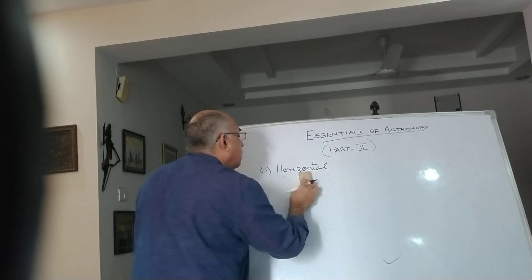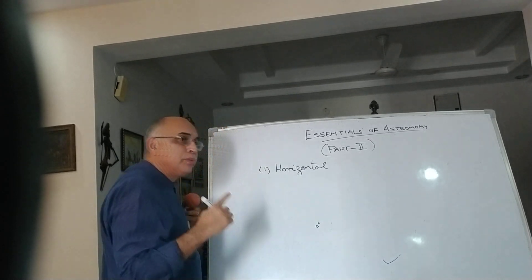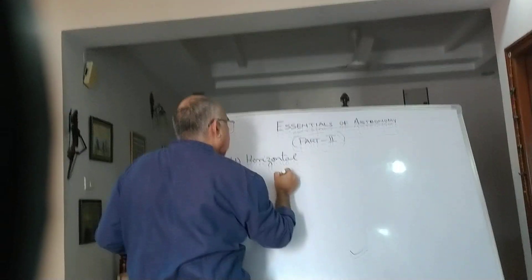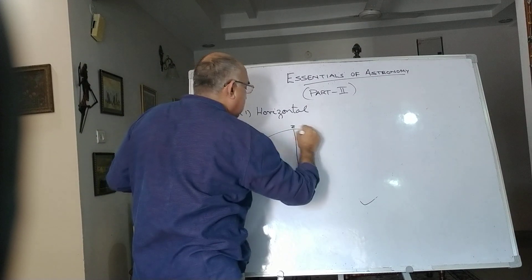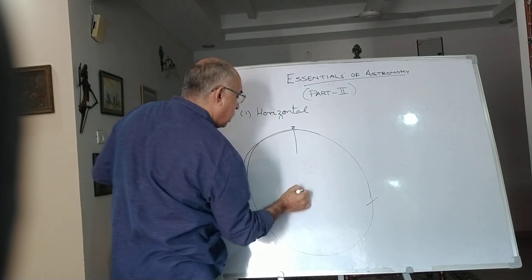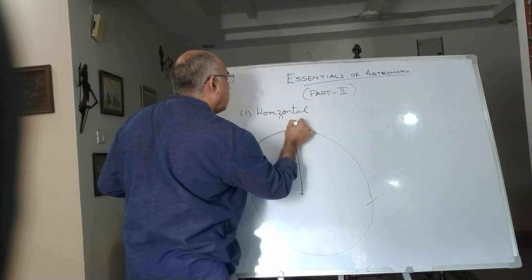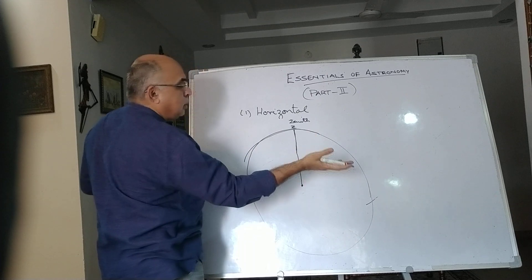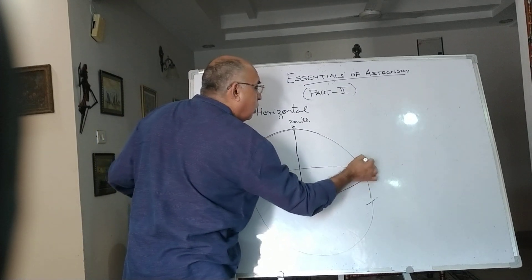First we come to the horizontal coordinate system. We imagine an observer O, and the point right above the observer's head is called the zenith. You take a plane which bisects OZ perpendicularly, and the great circle you get is called the celestial horizon.